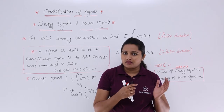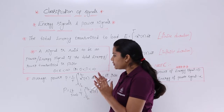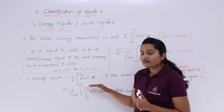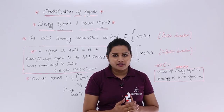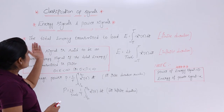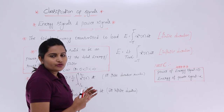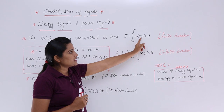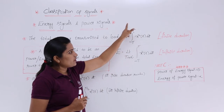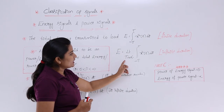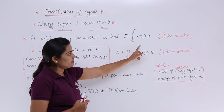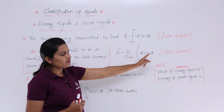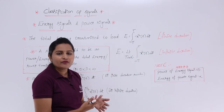We have formulas to calculate energy for both finite and infinite duration signals. To calculate energy, you observe the signal: if it is finite duration, use the formula E equals integral from minus T to T of x squared of t dt. For infinite duration, take the limit as T tends to infinity of integral from minus T to T of x squared of t dt.